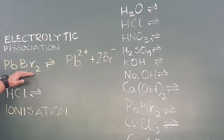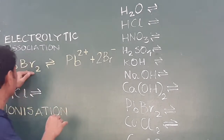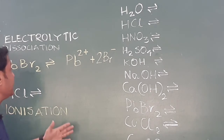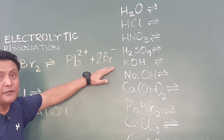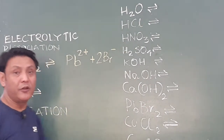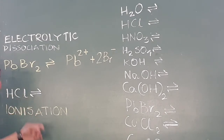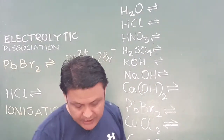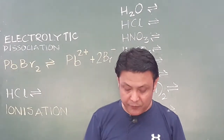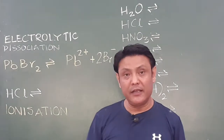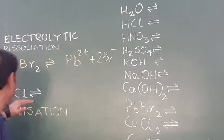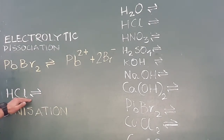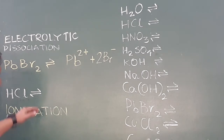This was electrolytic dissociation. Lead bromide is an ionic compound kept in a molten state, and when electricity passes through it, it breaks up into lead ions and bromide ions. Now, ionization is the process which takes place in covalent compounds — it involves the formation of ions from molecules which are not in a solid ionic state. HCl, hydrochloric acid or hydrogen chloride, is a polar covalent compound, as we covered in the chapter on chemical bonding.